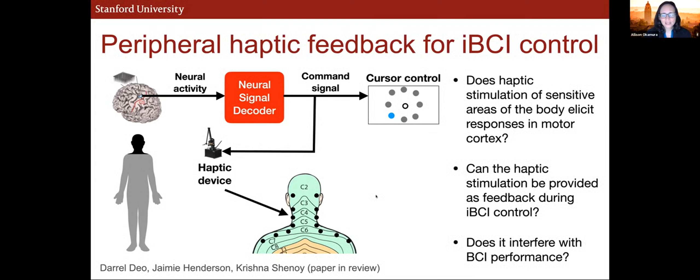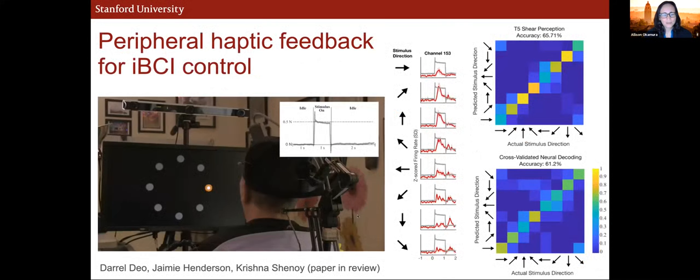And I won't get into scientific questions about this, but it's been really interesting for us to see that we can elicit responses in motor cortex, even if we're thinking and visualizing about moving a hand, but we're providing feedback in the back of the neck. Does that work? Yes. And can that feedback be useful to help in this sort of invasive brain-computer interface control? Yes. And it also could have interfered with performance, which it did not.